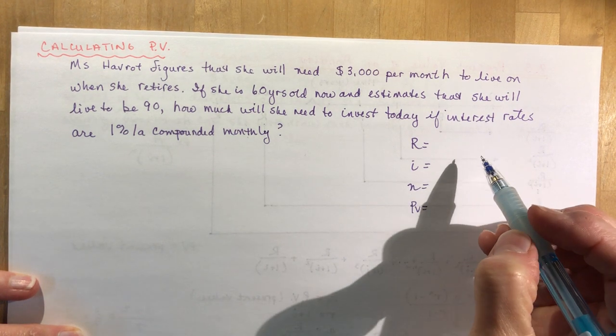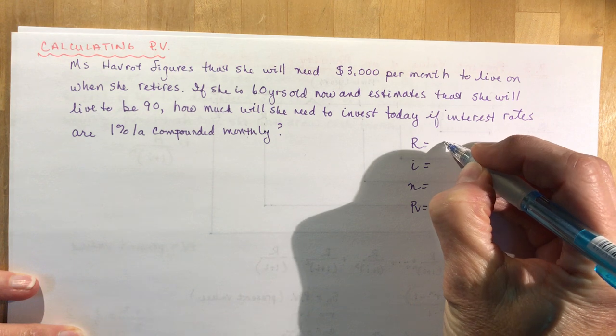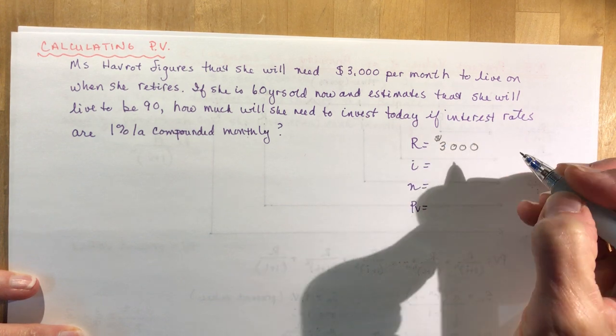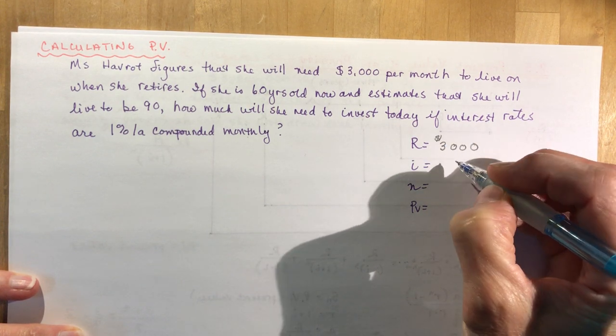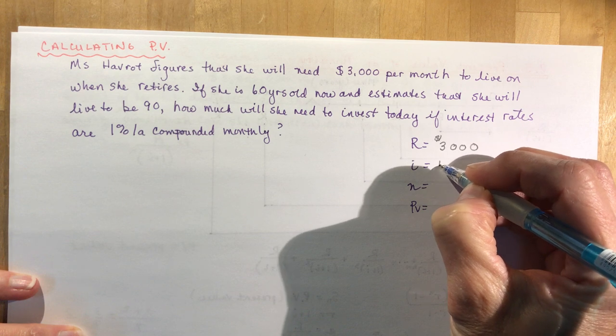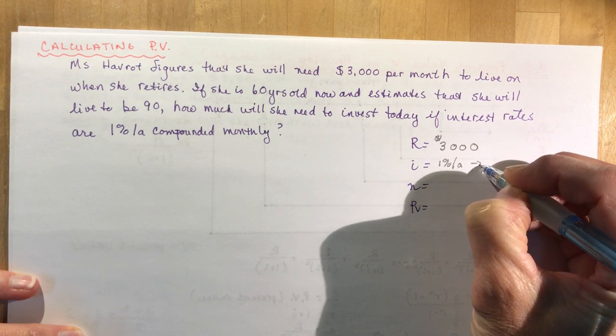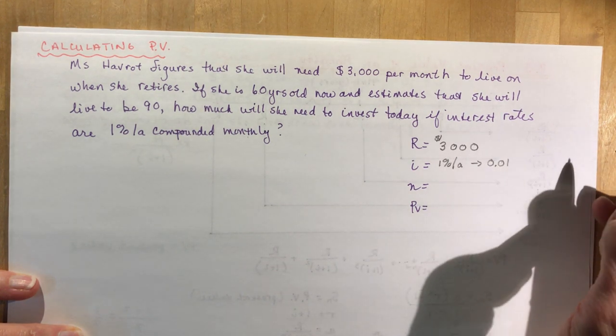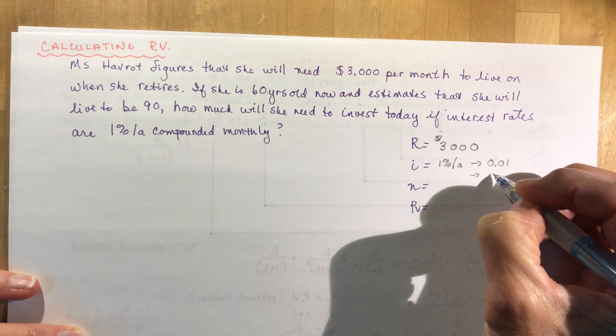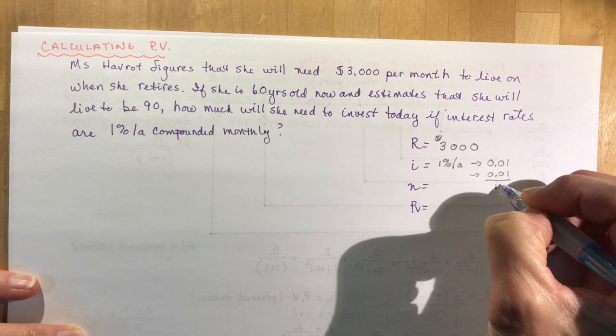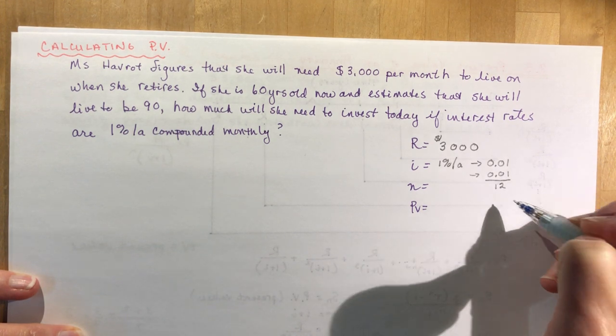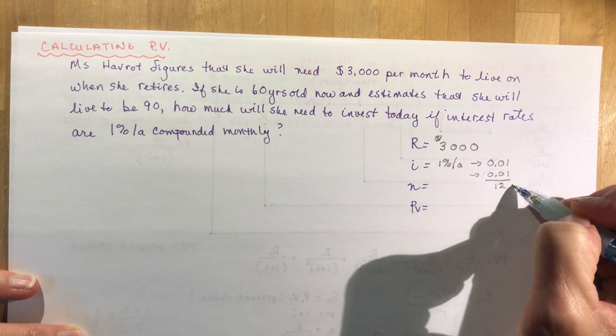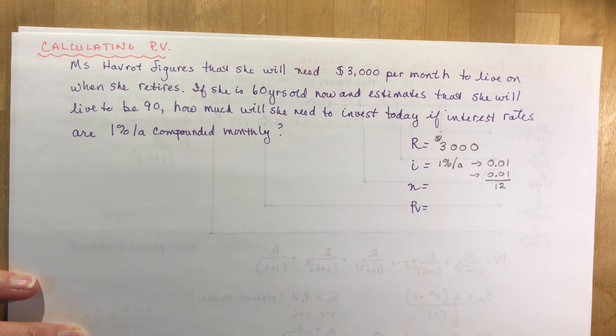I am trying to find my present value. The R that I'm going to be withdrawing is $3,000. The i is 1% compounded monthly, so I have to take 1% per annum, divide by 100 to make it a decimal 0.01, and then to get it to monthly I have to do 0.01 divided by 12. You can leave it like that in your calculation or you could figure out the decimal. This would probably give you a more accurate answer.